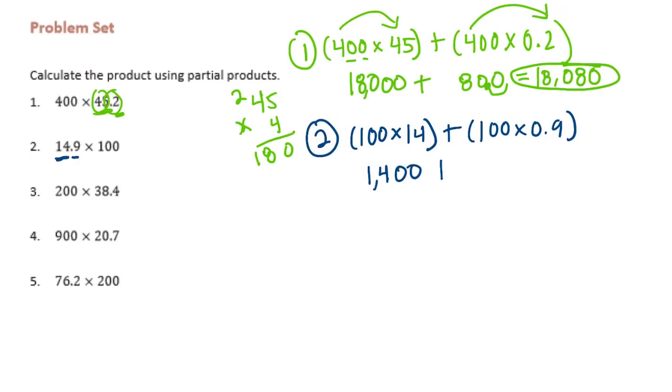Plus 100 times 0.9. I'm going to forget about the decimal point and just do 100 times 9 is 900, but we need to divide by 10 or move the decimal point one place to the left and we'll get 90. So if we add those together, we have 1,490.